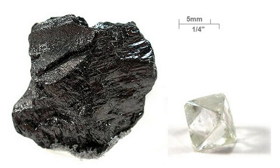The most common oxidation state of carbon in inorganic compounds is +4, while +2 is found in carbon monoxide and transition metal carbonyl complexes. The largest sources of inorganic carbon are limestones, dolomites and carbon dioxide, but significant quantities occur in organic deposits of coal, peat, oil, and methane clathrates. Carbon forms a vast number of compounds — more than any other element — with almost 10 million compounds described to date, and yet that number is but a fraction of theoretically possible compounds. For this reason, carbon has often been referred to as the king of the elements.